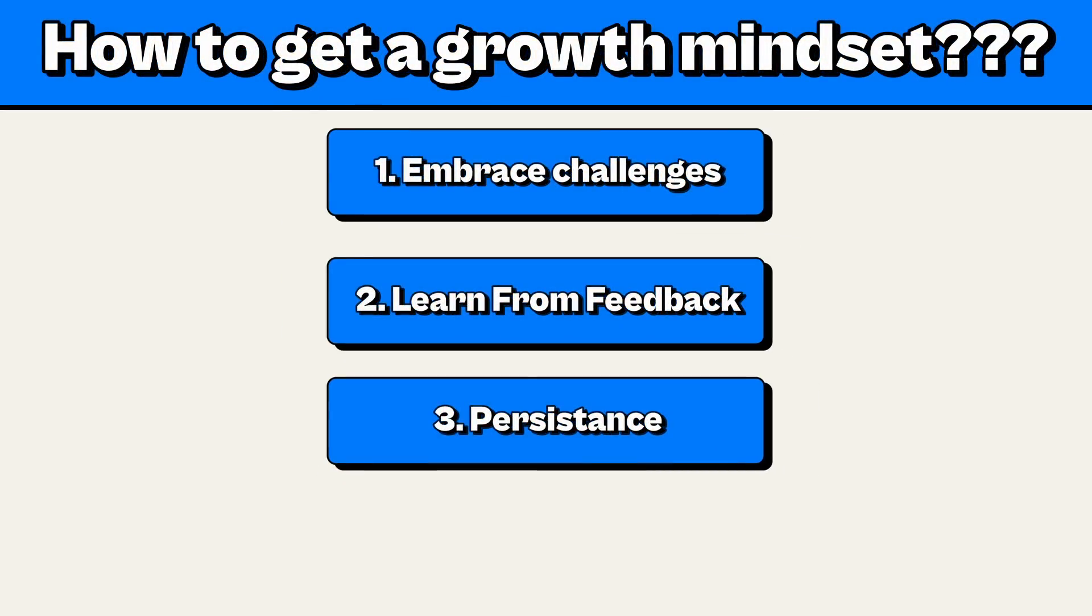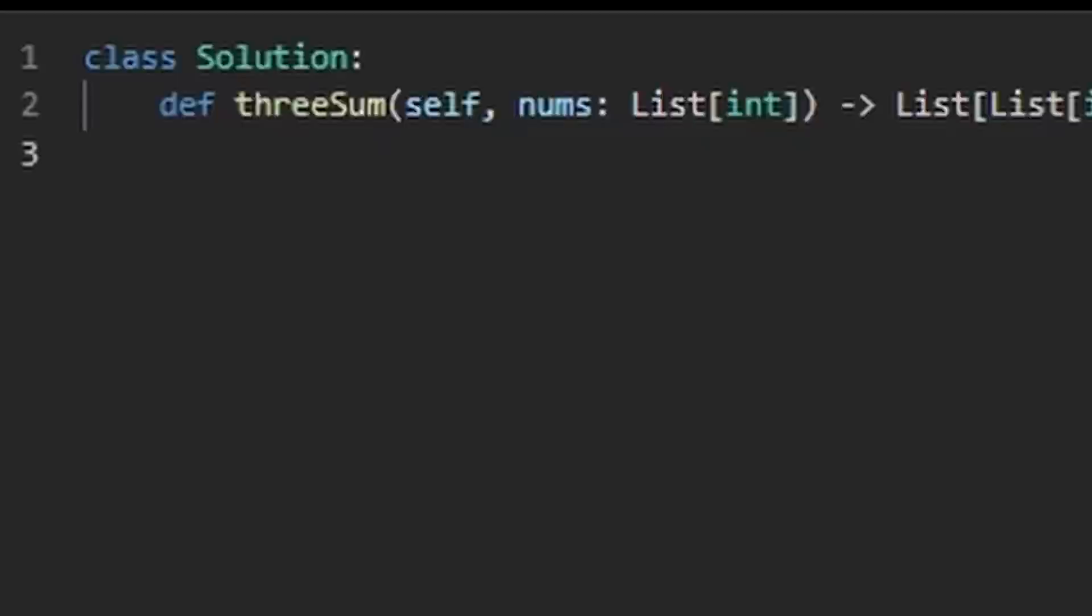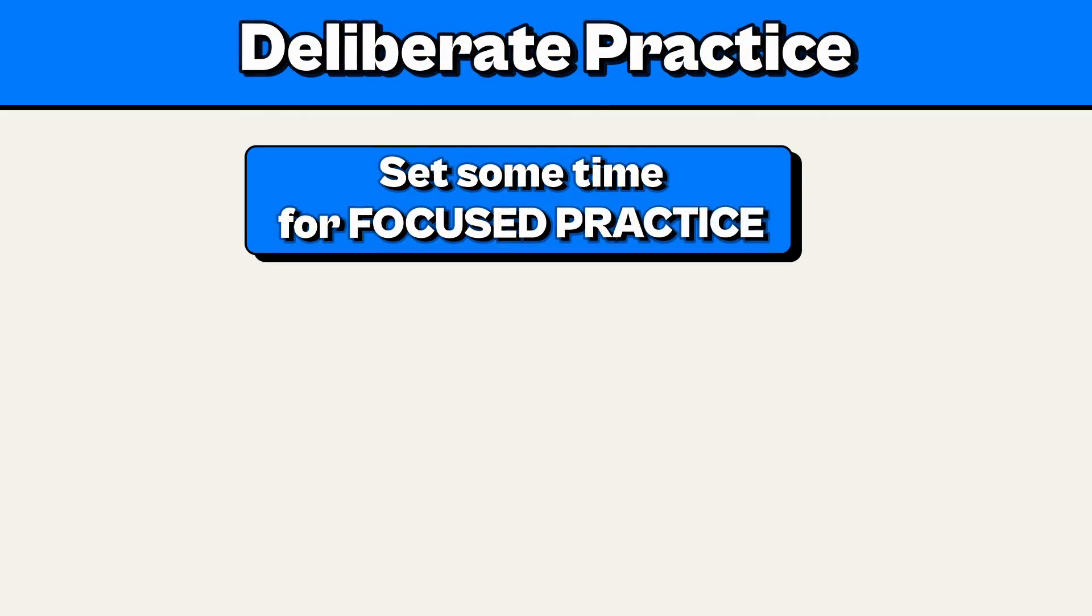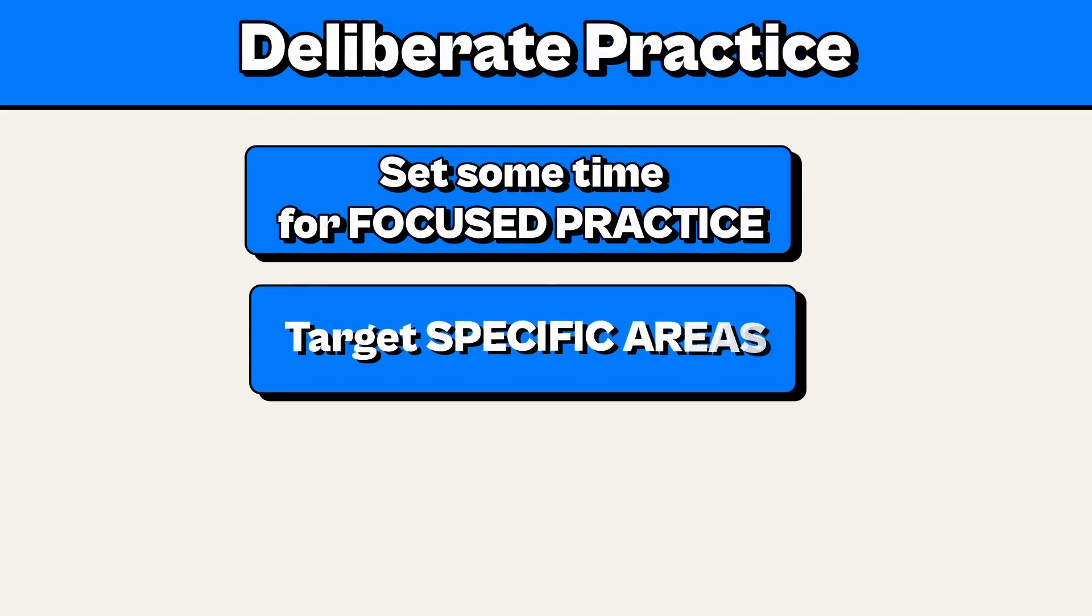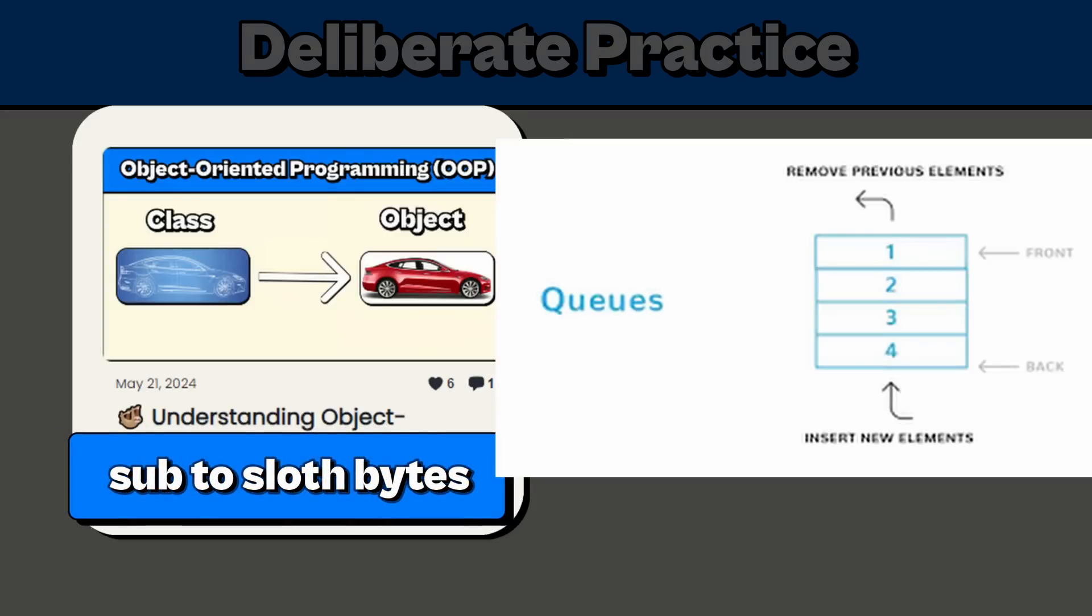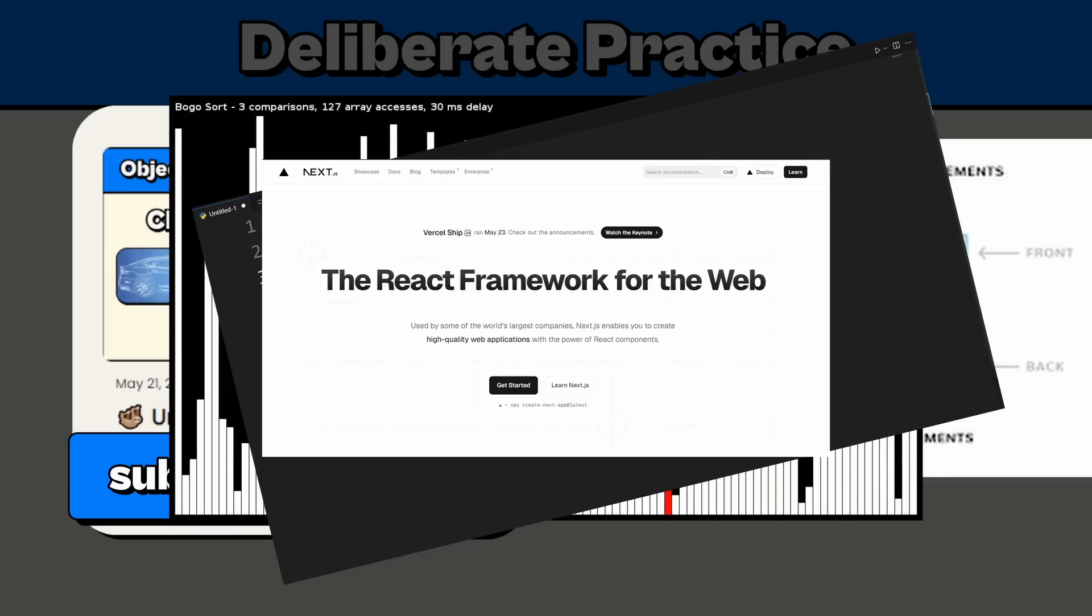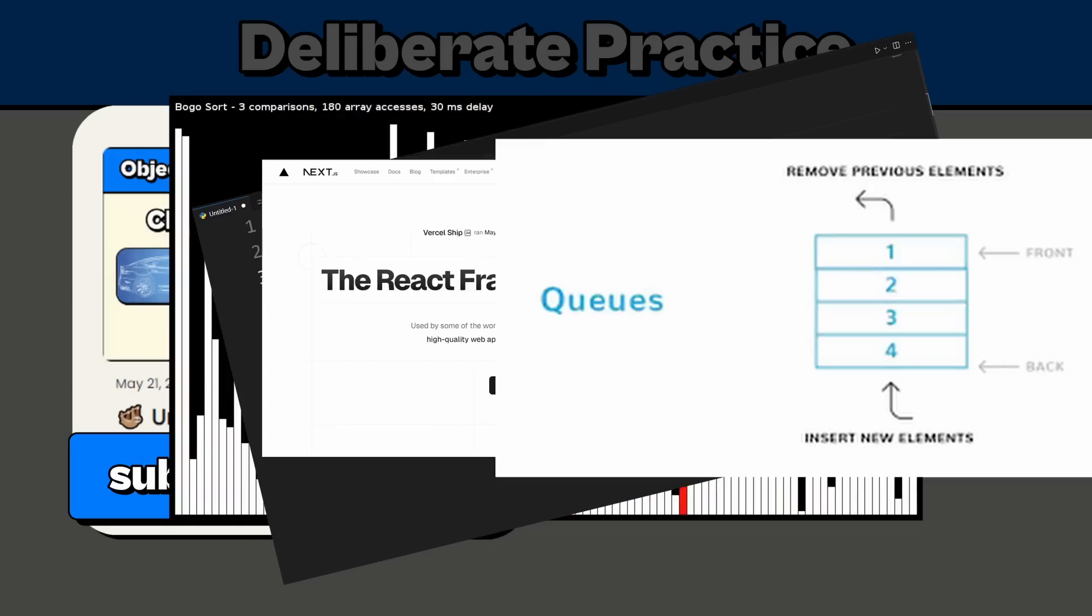And the fourth tip to develop a growth mindset is to practice deliberately. Deliberate practice is essential for programming. Set aside some time for focused practice. Target specific areas where you need to improve, whether it's something like object-oriented, data structures, algorithms, the fundamentals, a framework. You have to practice with purpose and concentration.